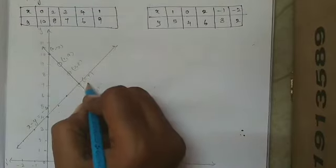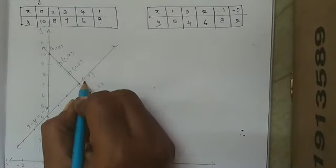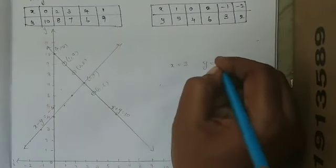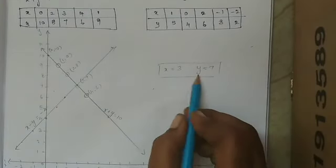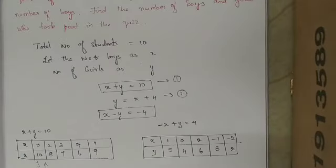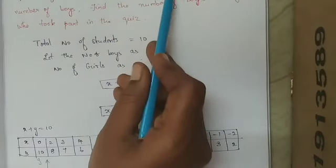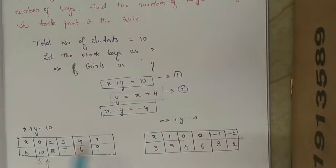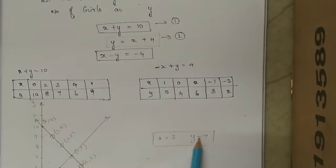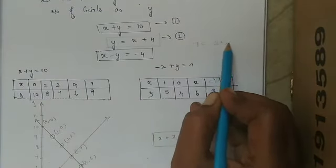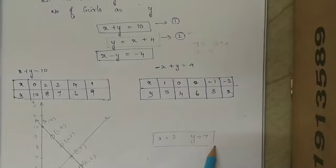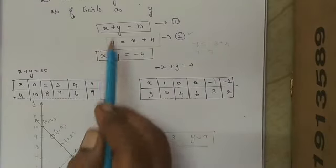From the graph, the two lines intersect at x equals 3 and y equals 7. Therefore, x equals 3 and y equals 7 is the solution. After finding the solution, let us verify with the given condition — the number of girls is 4 more than the number of boys. Y equals 7, and x plus 4 equals 3 plus 4 equals 7. So 7 equals 7. Both sides are satisfied. Therefore, this is the exact unique solution for the given pair of linear equations.